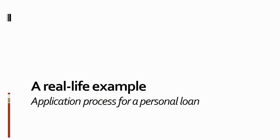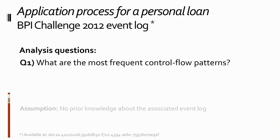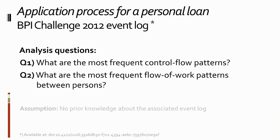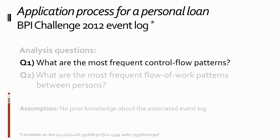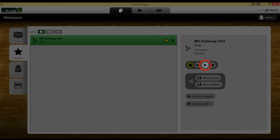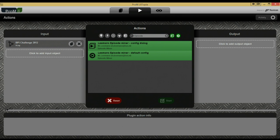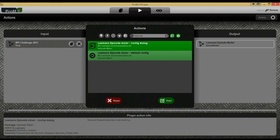Now we will show you how to discover episodes in PROM using a real-life event log from an application process for a personal loan. This event log is publicly available as the BPI Challenge log of 2012. Note that we assume no prior knowledge about this event log. The first question we want to answer is: what are the most frequent control flow patterns? And the second question is: what are the most frequent workflows between persons? We have already loaded the event log into PROM. Click the action button to use this event log. Now we have to find the episode miner plugin — use the search bar to search for episodes. Now we have two variants of the episode miner; select the top variant. This will give a configuration dialog before discovery.